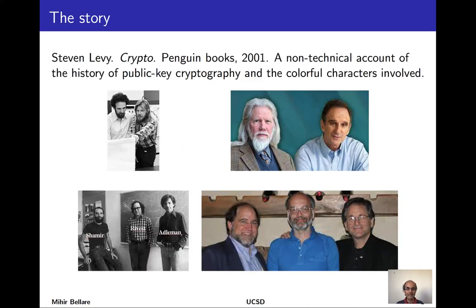For millennia people developed cryptography and yet it always stayed in a symmetric setting. So in the 1970s the birth of public key cryptography was a revolution. You can read about the story and the characters involved in this book by Stephen Levy. Shown here are some of the inventors: Diffie and Hellman, and Rivest, Shamir, and Adleman.